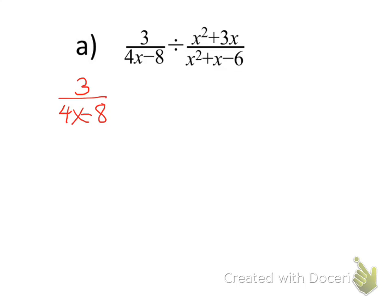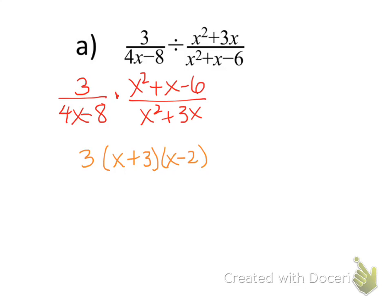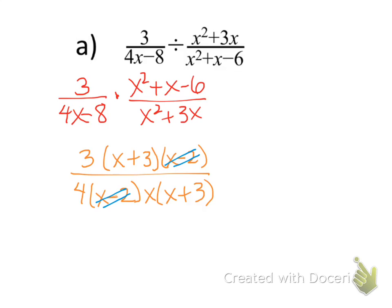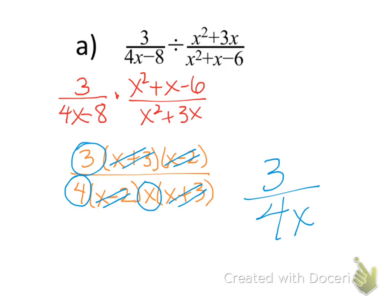For the last example, rewrite as a multiplication problem. The first fraction stays the same: 3 / (4x - 8). Change to multiplication and flip the second fraction: times (x² + x - 6) / (x² + 3x). Now factor: x² + x - 6 factors as (x + 3)(x - 2). Factor 4 out of the first denominator, leaving (x - 2); factor x out of the second denominator, leaving (x + 3). The (x - 2)'s cancel and the (x + 3)'s cancel, leaving 3 / (4x).